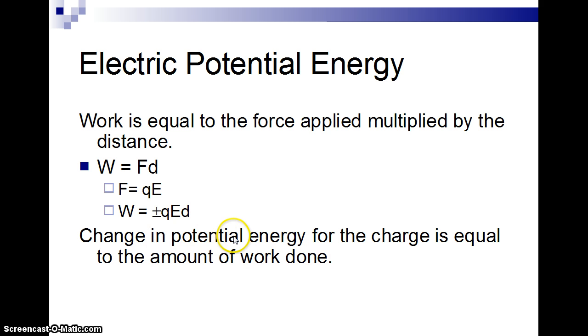So the change in potential energy, we'll assume this is moving at a constant speed. If it's speeding up or slowing down, the work could be equal to the change in kinetic energy as well. So, the change in electric potential energy, in this case, instead of gravitational potential energy, is plus or minus QED, plus if you're going against the electric field, minus if you're going with the electric field, just like you're dropping an object or lifting an object.